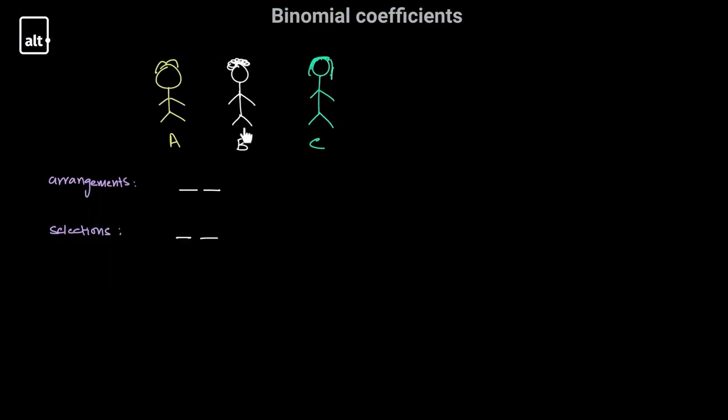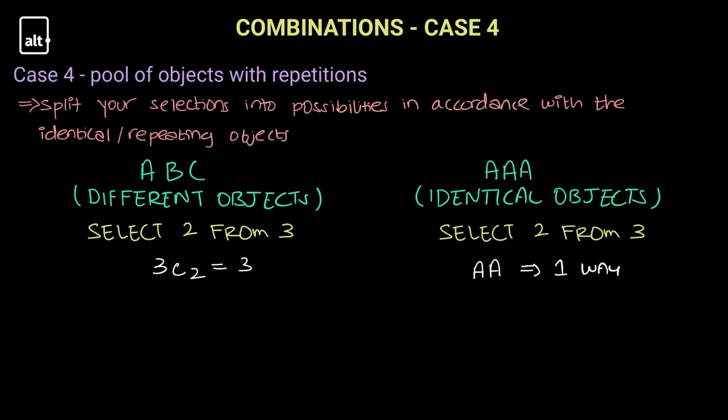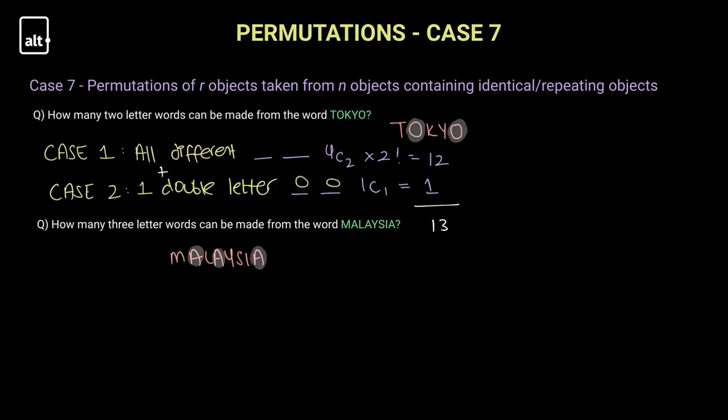Choose two people from this group of three. How many different ways are there of arranging those two people? My combination will have the exact same result, which is two A's, because the objects are identical. So from the three...